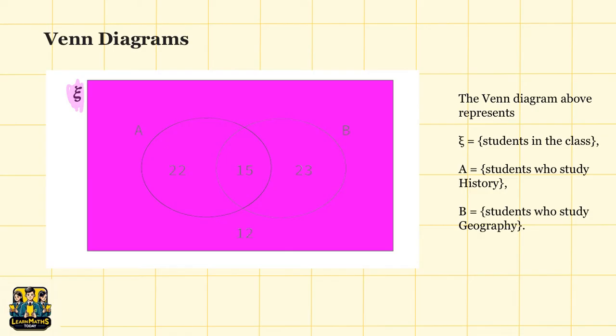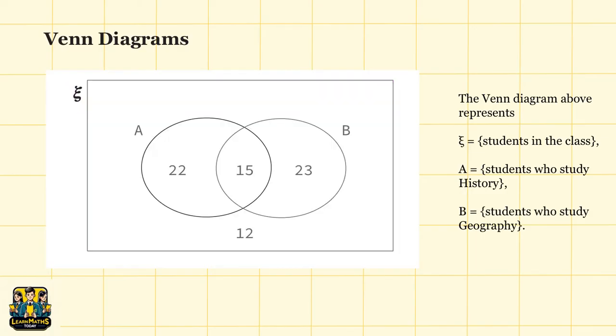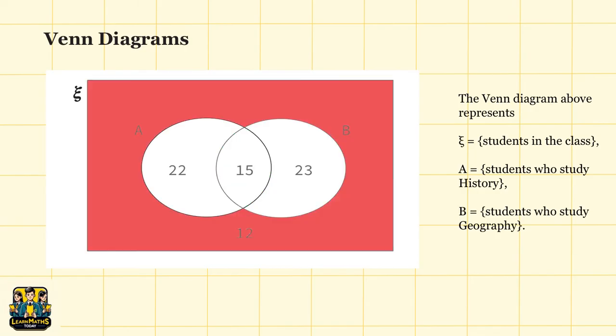In this Venn diagram above, you can see that the universal set refers to all the students in the class. Set A refers to students who study history. Set B refers to students who study geography. For the Venn diagram, you could say that 22 students study history only, 23 students study geography only, 15 students study both history and geography, and 12 students do not study either history or geography.